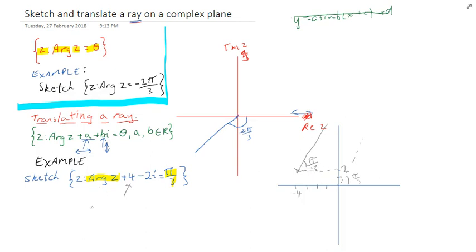Something you're going to notice here is that it moves the opposite of what you'd expect. If it's positive 4, it's going to move negative 4 in the real. If it's negative 2i, it's going to move positive 2 in the imaginary. That's sketching and translating rays in a complex plane.